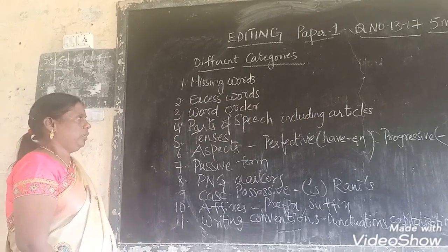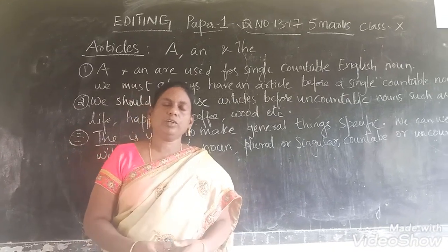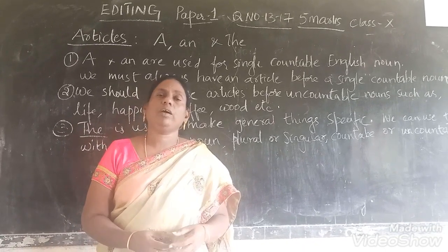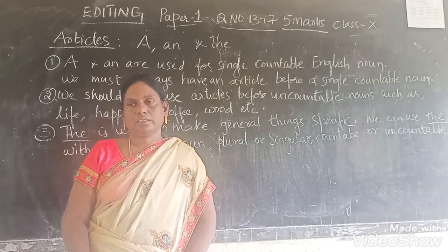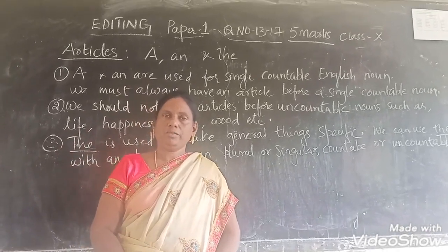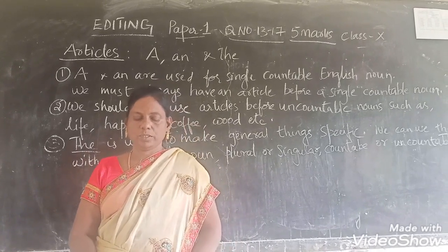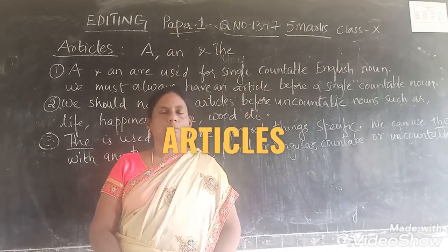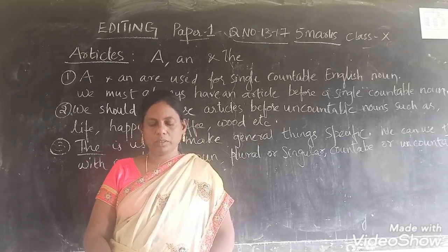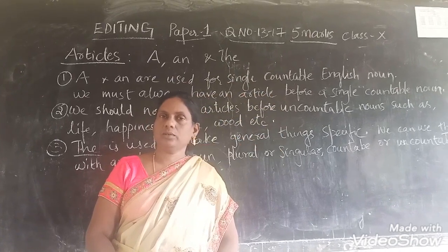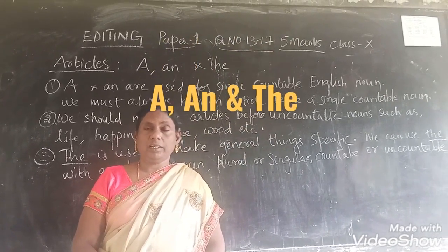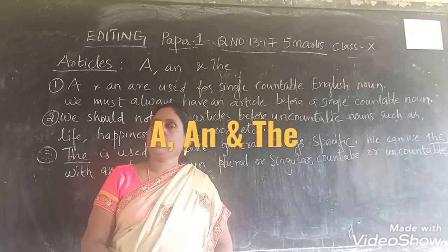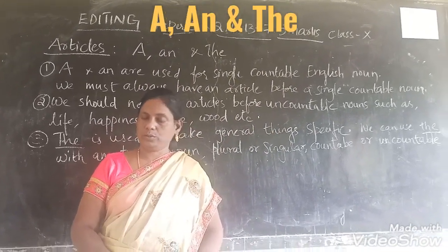Now let's go into articles. If you see parts of speech, we have nouns, pronouns, adjectives, verbs, adverbs, prepositions, conjunctions and interjections. We have eight different types of parts of speech. In the different sentences we have to observe whether the proper parts of speech are used — whether proper prepositions, conjunctions, interjections, and adjectival or adverbial forms are used. We have to see whether the correct vocabulary is used.